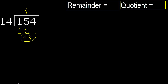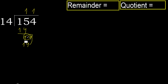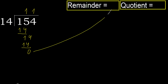Next, bring down 14. 14 multiplied by 1 is 14 — 14 is not greater. Ok, subtract. Next — that is not a number, therefore finish.